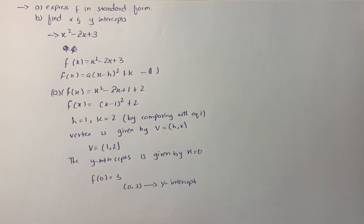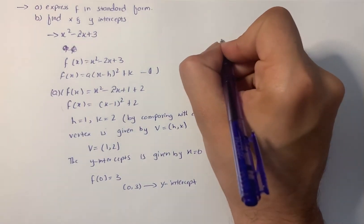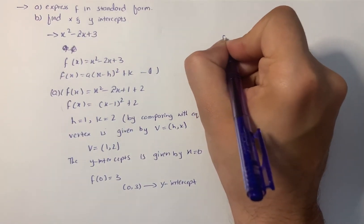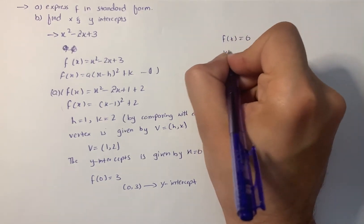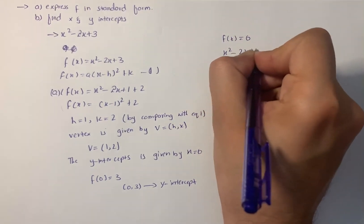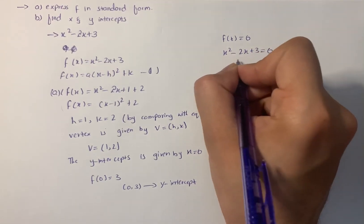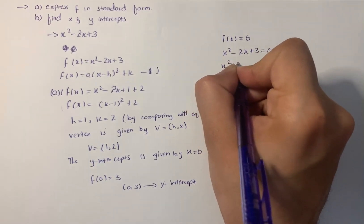Now the x-intercept is given by equating f(x) = 0. We have x² - 2x + 3 = 0. On further simplification, we have x² - 3x + x - 3.